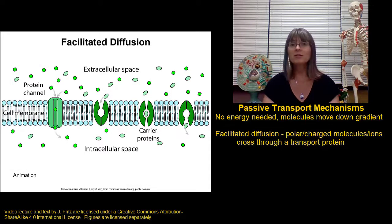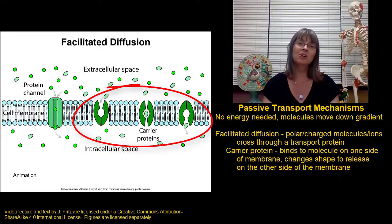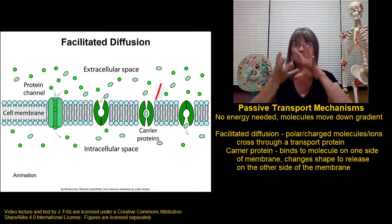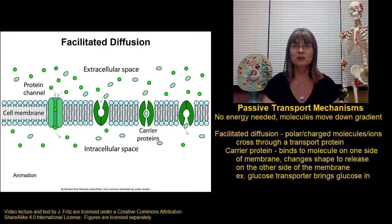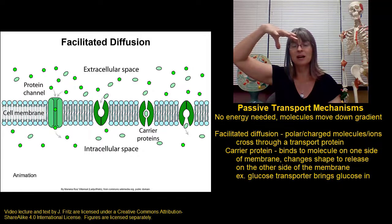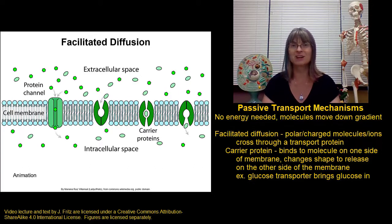There are a couple of different types of transport proteins that allow facilitated diffusion. One is what's often referred to as a carrier protein. A carrier protein binds to a molecule on one side of the cell, changes shape, and releases that molecule on the other side of the membrane. A good example of this would be a glucose transporter that binds to the glucose transport molecule on the outside of the cell, and then that molecule changes shape to release the glucose on the inside of the cell.